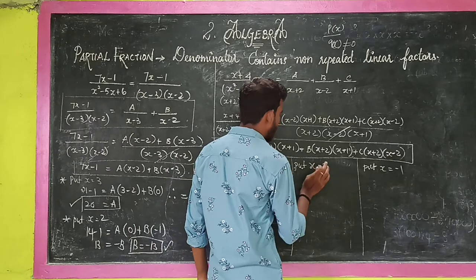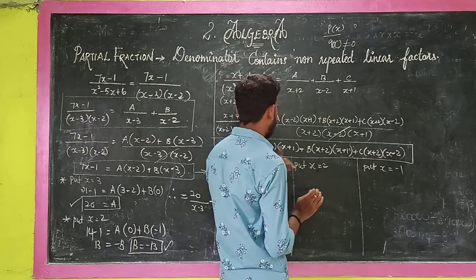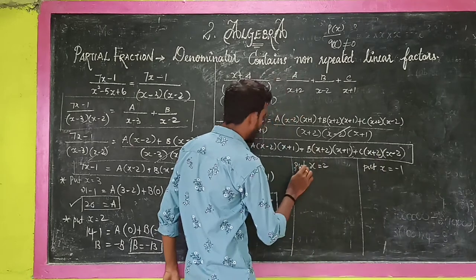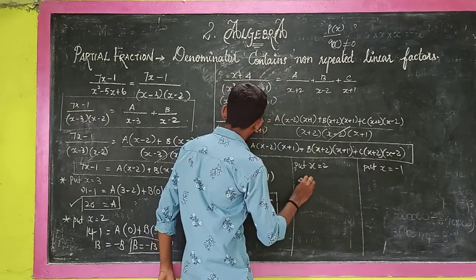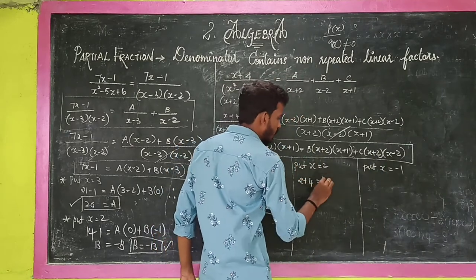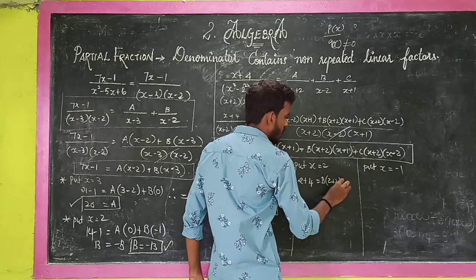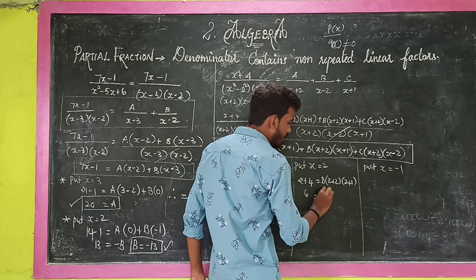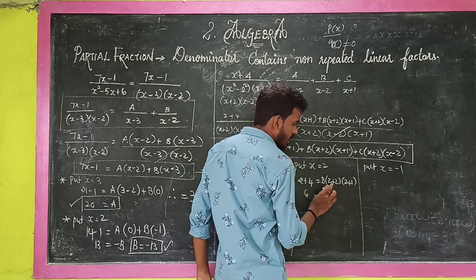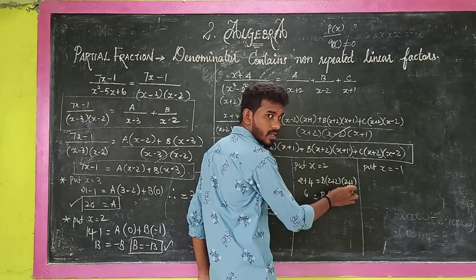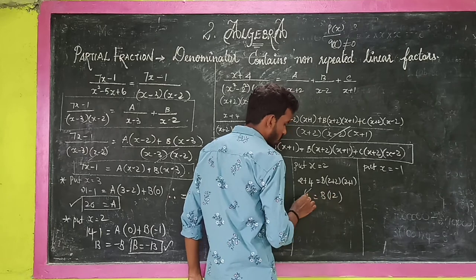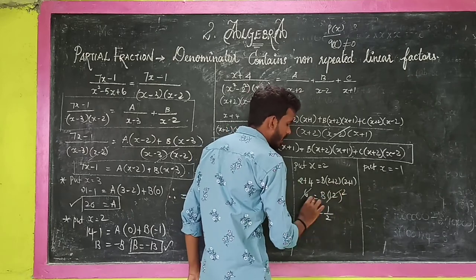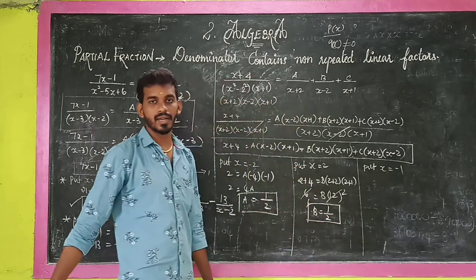Now put x equals 2 to find B. A and C terms become zero. So 2 plus 4 equals 6, equals B into (2 plus 2)(2 plus 1) equals B into 4 times 3 equals 12B. Therefore B equals 6/12 equals 1/2.